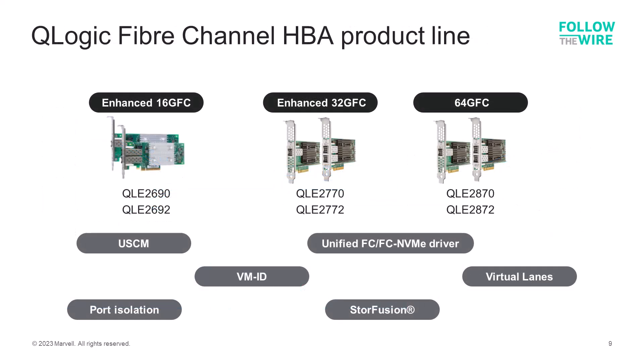Here's the Marvell QLogic portfolio for HBAs that support all the features we've discussed. The QLE 2690 series single and dual port adapters provide 16-gigabit connectivity. The QLE 2770 series provide 32-gigabit Fiber Channel connectivity. And the QLE 2870 series are the 64-gigabit Fiber Channel offerings.